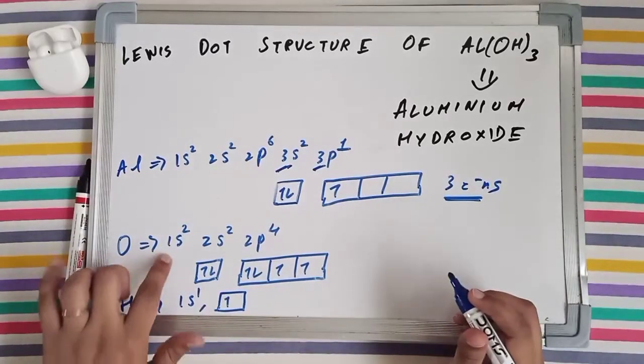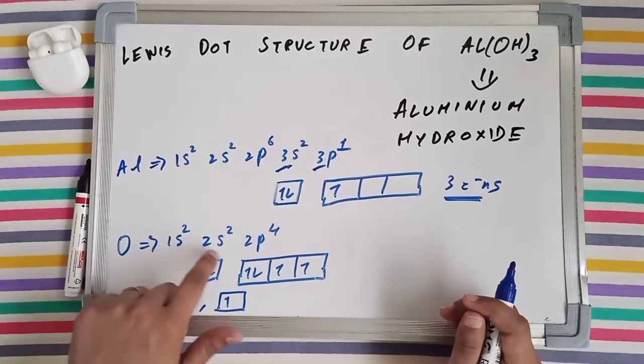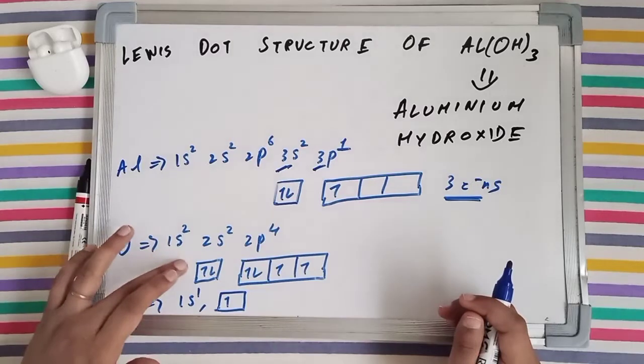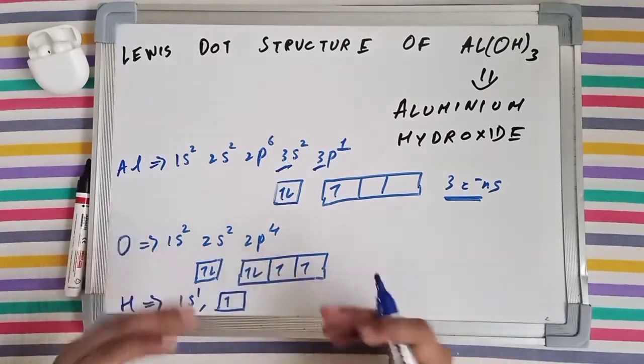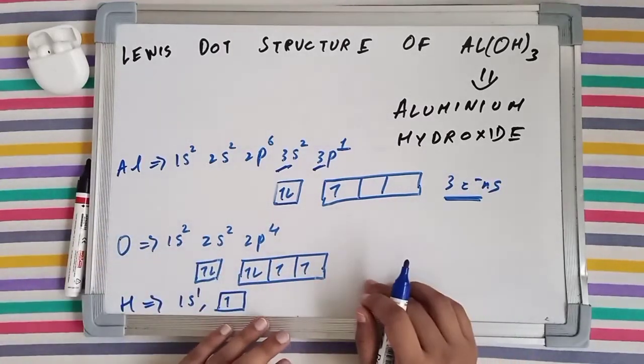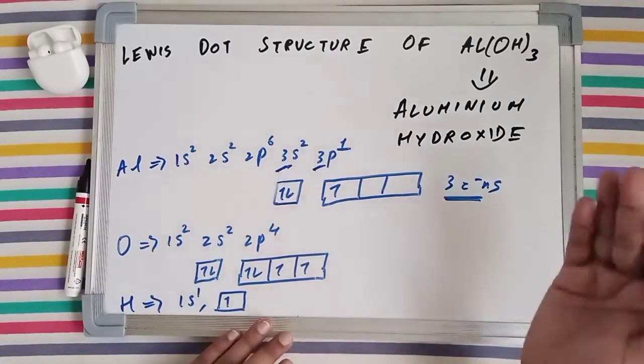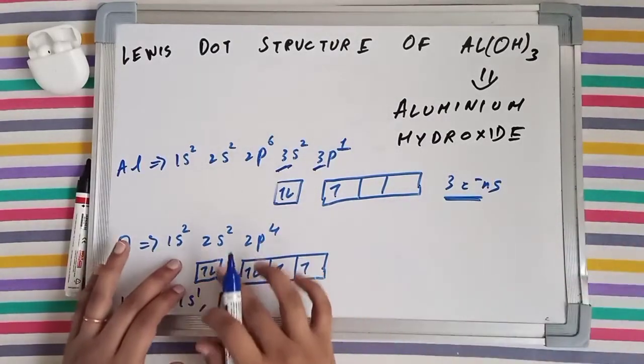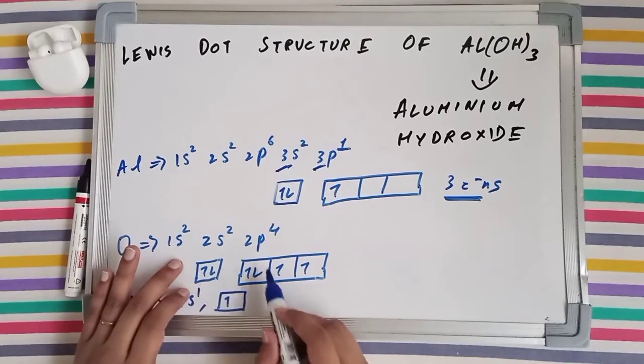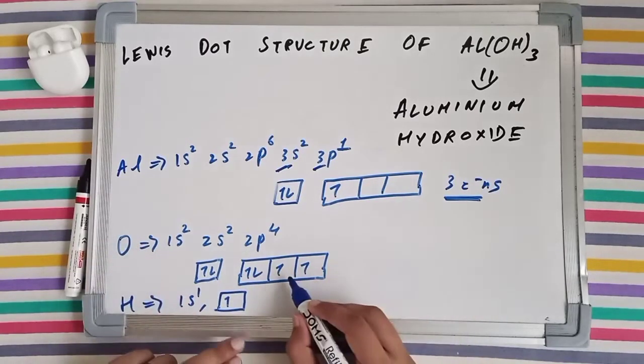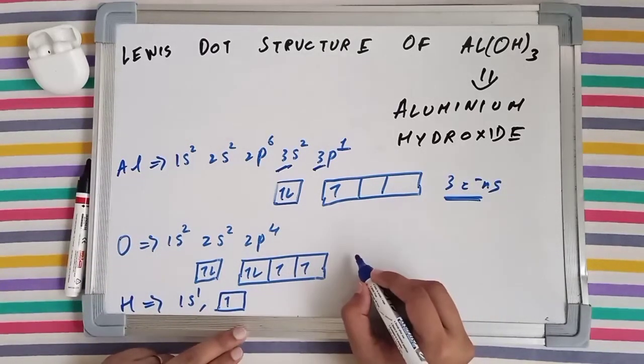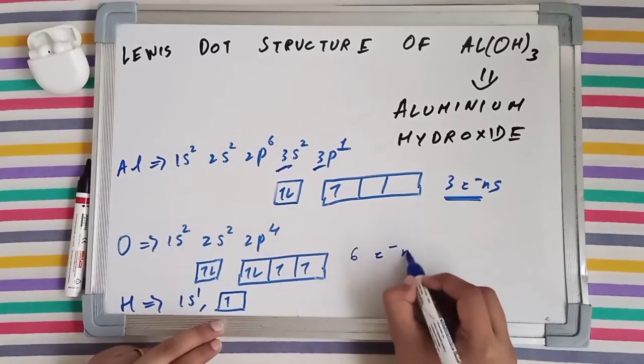Now oxygen. Oxygen's electronic configuration is 1s2, 2s2, 2p4. I've drawn the orbital diagrams for 2s and 2p. We always tend to draw the orbital diagrams of the valence subshells. For 2s it has 2 electrons, for 2p it has 4 electrons. The number of valence electrons are 2 plus 4, 6 electrons.